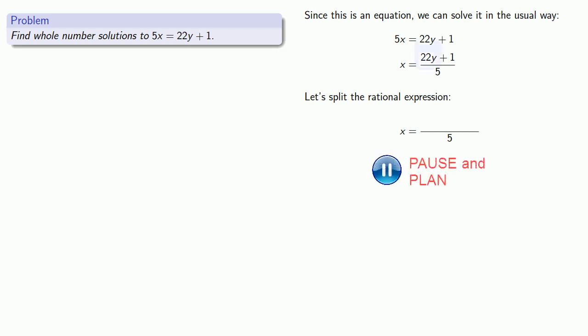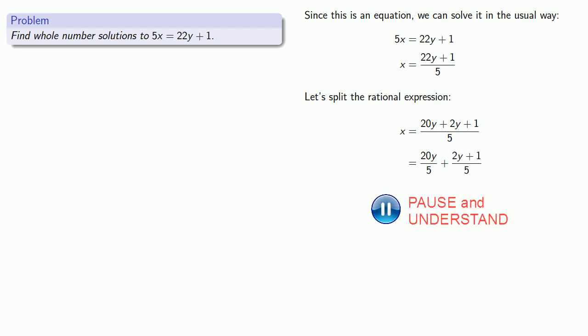So this 22y, we can split this into a part that is divisible by 5, that would be 20y, and the leftovers 2y. And the plus 1 is never going to be divisible by 5, so we'll keep that with the leftovers. But now that I have my numerator written as a sum, I could split the fraction into a sum of two fractions, 20y over 5, and 2y plus 1 over 5. And this first part can be reduced, leaving us with 4y plus 2y plus 1 over 5.